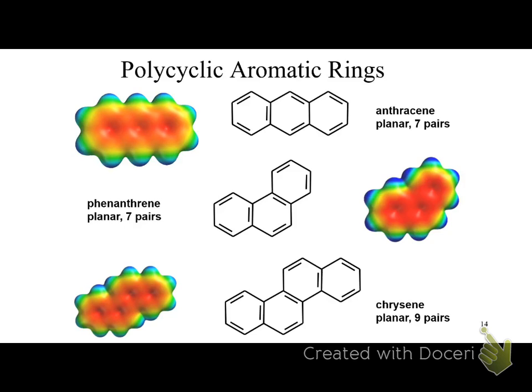Anthracene has seven electron pairs — an odd number, so aromatic. Phenanthrene is like anthracene with one ring moved up. Chrysene has nine pairs. This principle that odd numbers of electron pairs makes compounds aromatic applies to all these polycyclic structures.